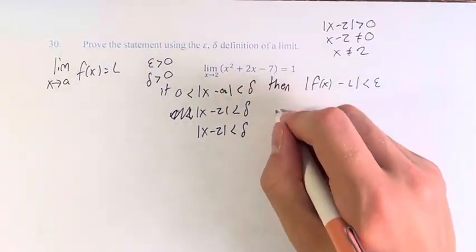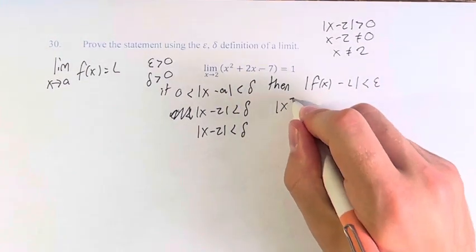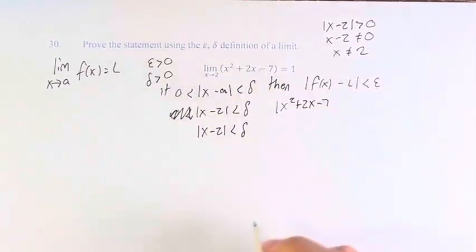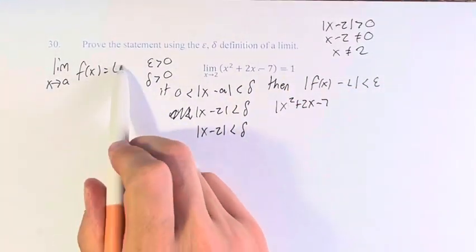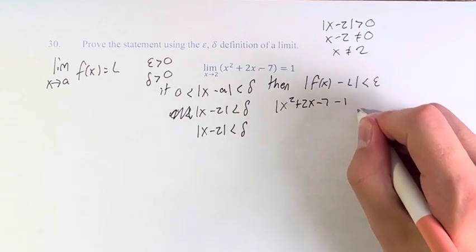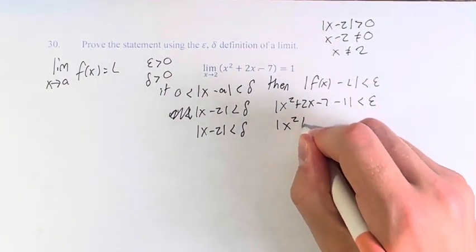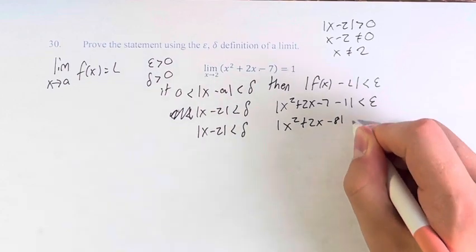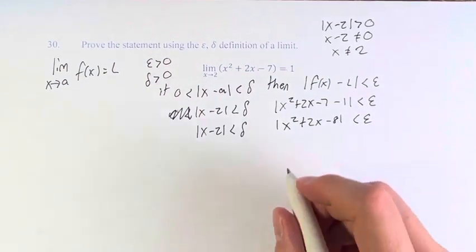Here, f of x is the function we have: x squared plus 2x minus 7. L is the value of the limit, so minus 1. This gives us the absolute value of x squared plus 2x minus 7 minus 1, which simplifies to x squared plus 2x minus 8, is less than epsilon.